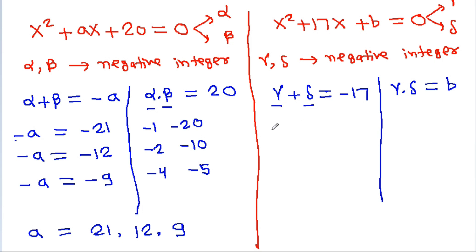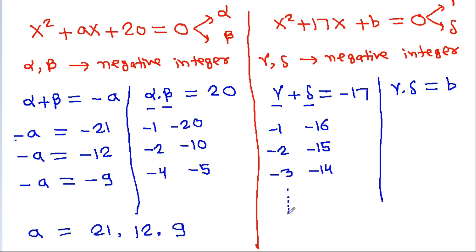So gamma and delta can be the pairs: minus 1 and minus 16, minus 2 and minus 15, minus 3 and minus 14, or minus 8 and minus 9.